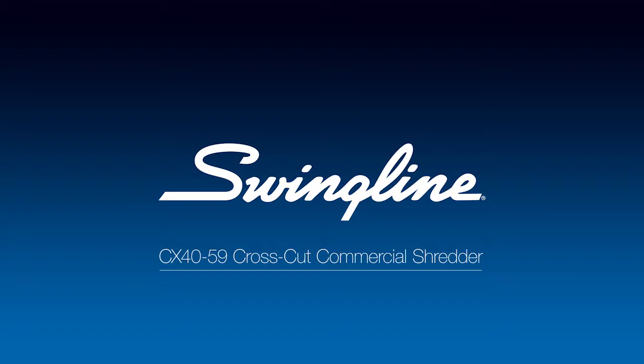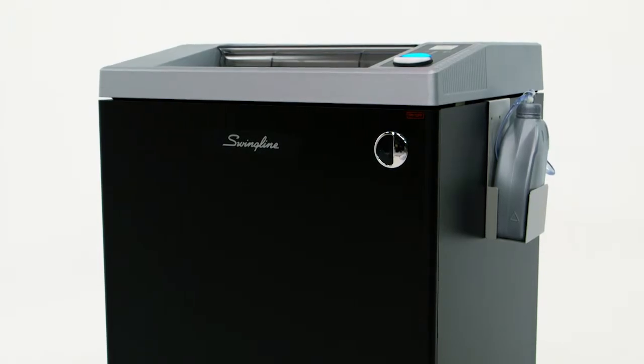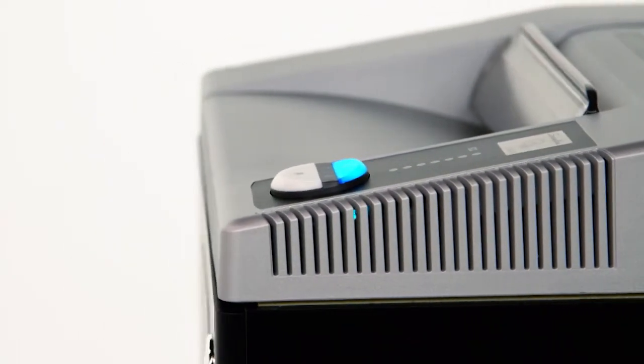Swingline CX4059 Cross-Cut Commercial Shredder. The Swingline CX4059 Cross-Cut Shredder shreds up to 40 sheets at a time and turns a single letter-sized document into 332 individual pieces.